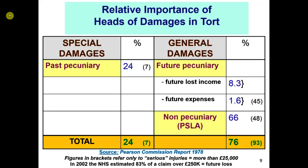What does the tort system actually achieve? When I talk to students about this — sometimes in the first tutorial — they say: it enables very seriously injured people to get money, they want their lost earnings, they want to make sure the mortgage is covered, they want money for future medical costs. So it enables seriously disabled people not to be out of pocket — that's what students think the tort system does. But no, it's not.